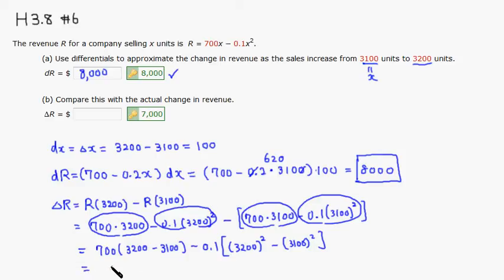So it's 70,000 minus 0.1. How do you compute that? This difference of squares is going to be 3200 minus 3100 times 3200 plus 3100. So this is going to be 70,000 minus, this is going to be 100, and that's going to be 6300.